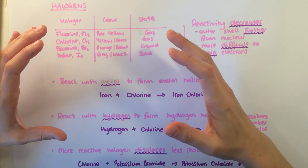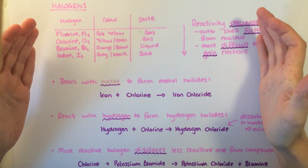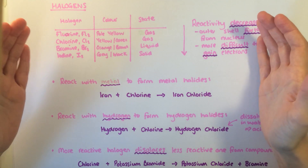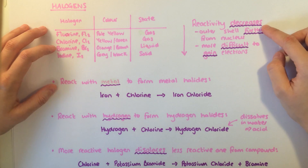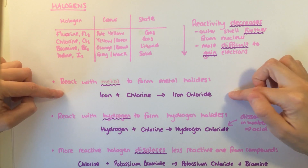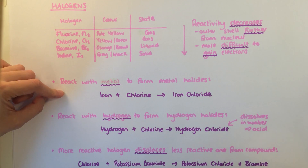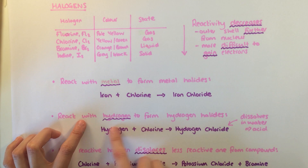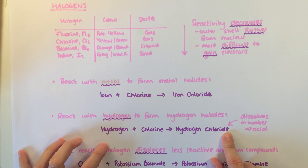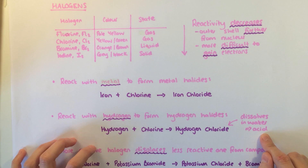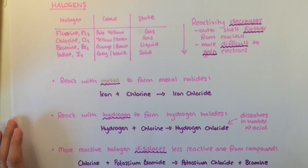When halogens react, they need to gain one electron to fill their outer shell. As you move down the group, the atoms become bigger, so the outer shell is further away from the attraction of the nucleus and it is more difficult to attract the required electron. This explains why reactivity decreases as you move down the group. Halogens react with metals to form metal halides — for example, iron reacting with chlorine forms iron chloride. They react with hydrogen to form hydrogen halides; hydrogen reacting with chlorine gives hydrogen chloride, which dissolves in water producing hydrochloric acid.